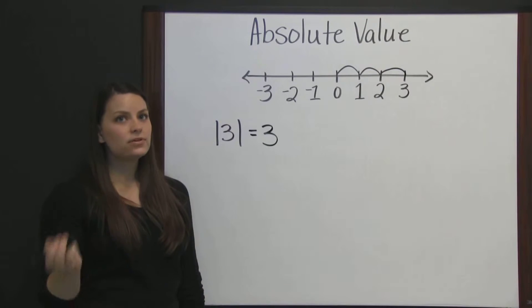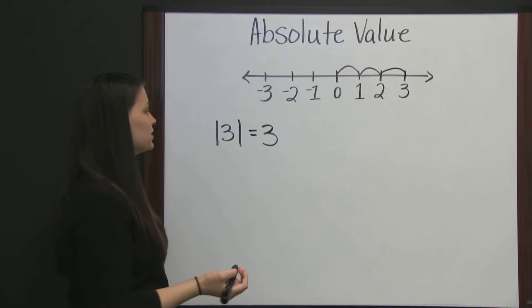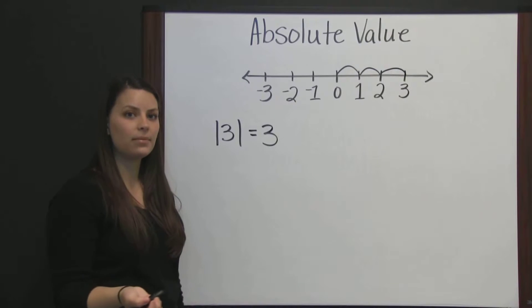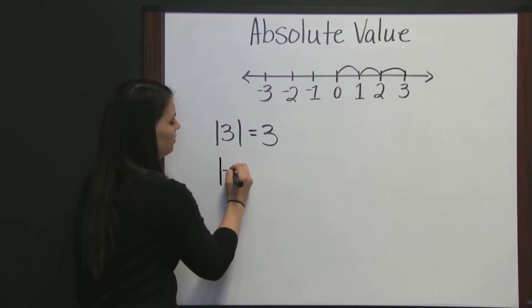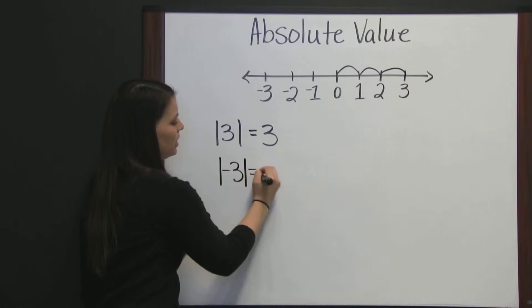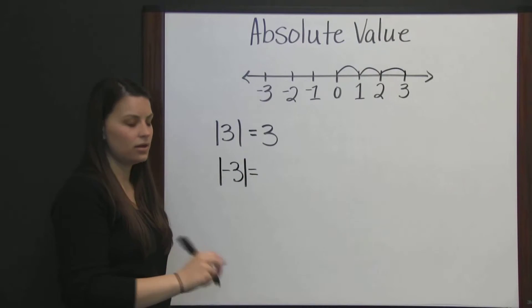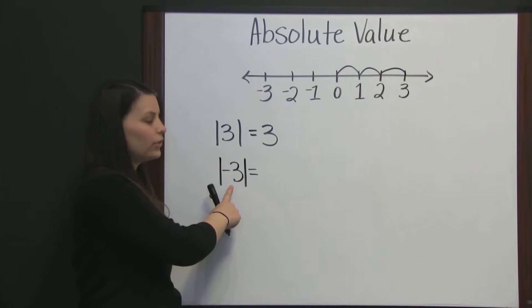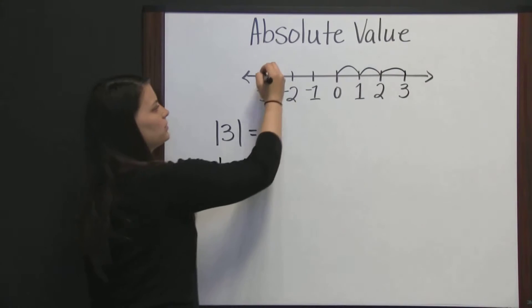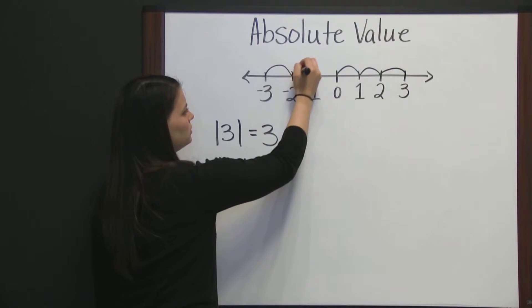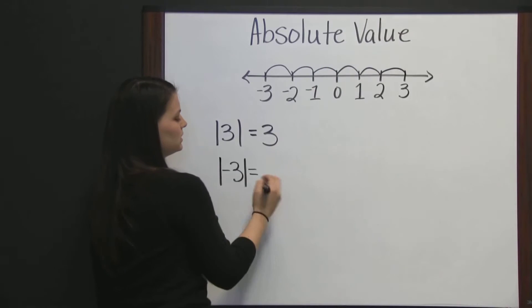The absolute value of a negative number and its positive counterpart are the same. So, the absolute value of negative three is also three, because negative three is also three places from zero. One, two, three places from zero.